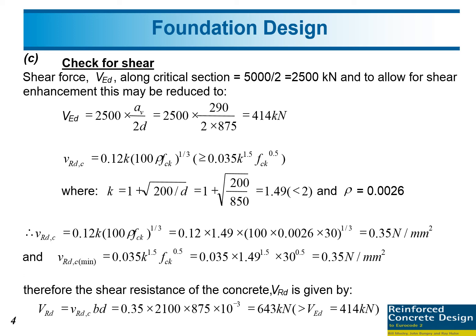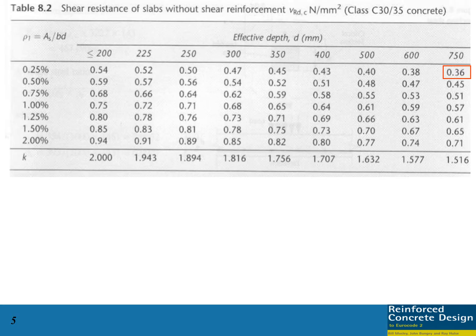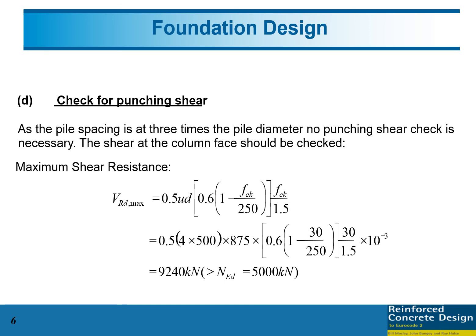The shear resistance of the concrete is given by VRDC multiplied by BD, so 0.35 times the width of the pile cap, 2100mm, times the effective depth 875mm, divided by 1000 to get kilonewtons. The shear resistance of concrete is 643 kilonewtons, but VED is only 414 kilonewtons, so this is sufficient.